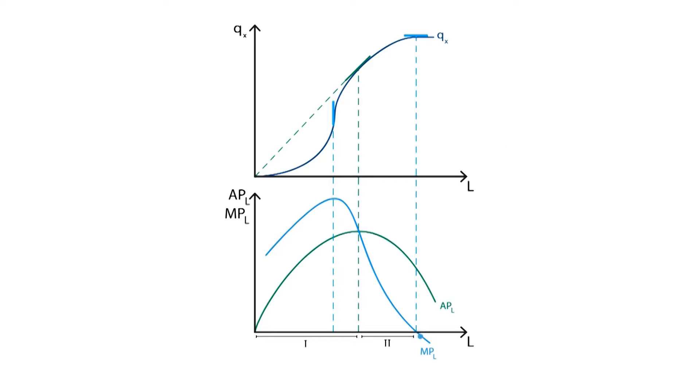When marginal productivity becomes negative, we enter Phase 3, and we should consider reducing labor.